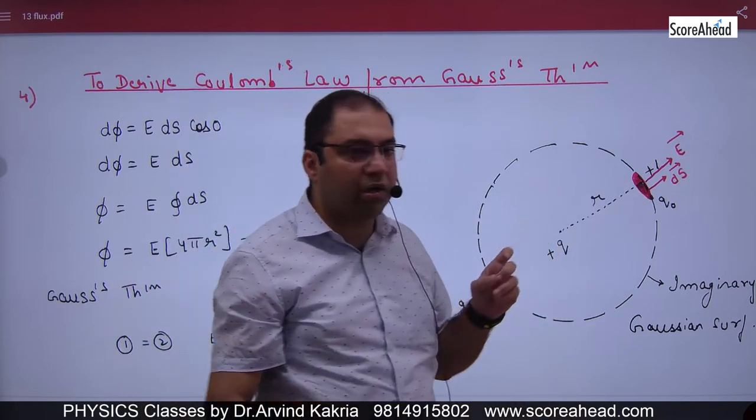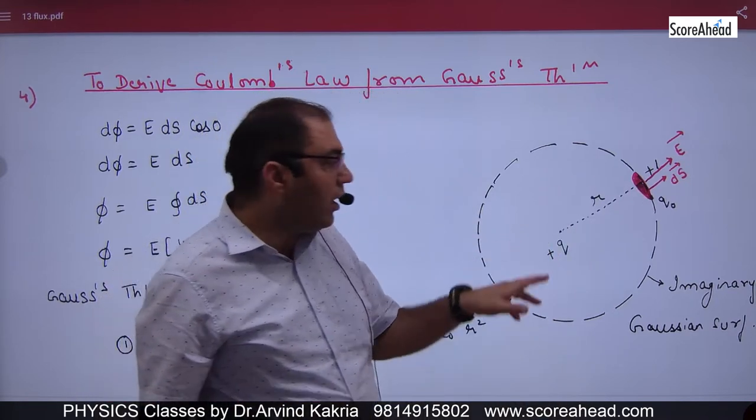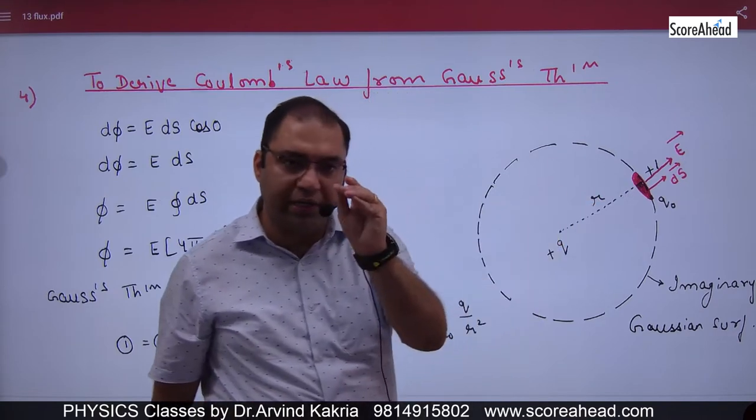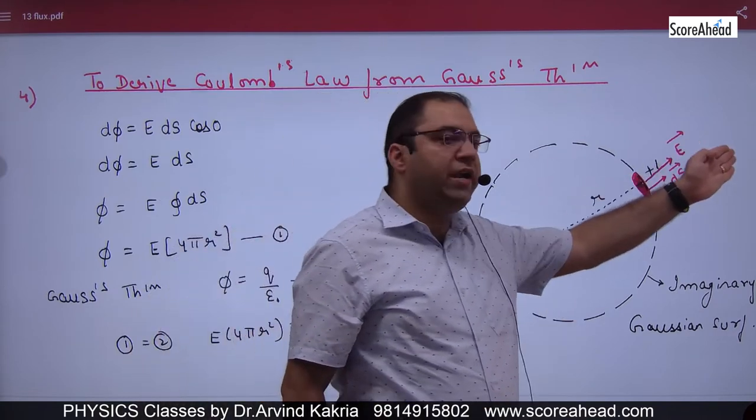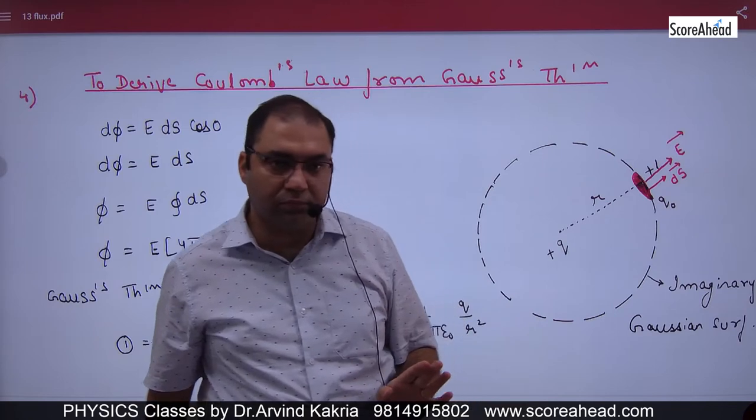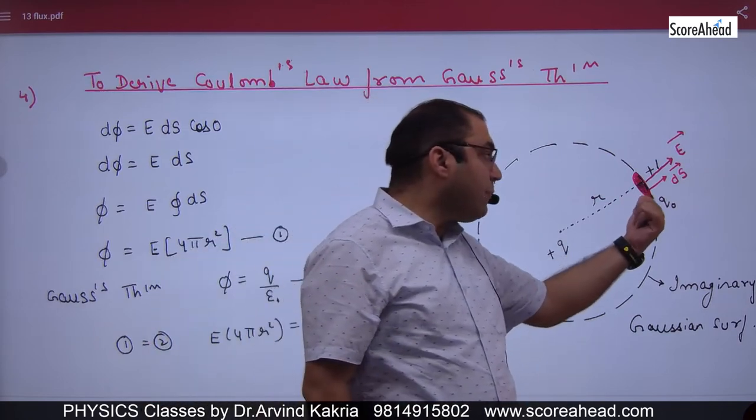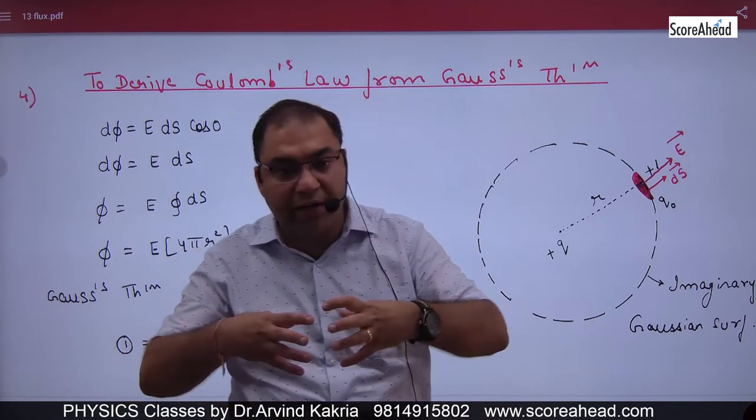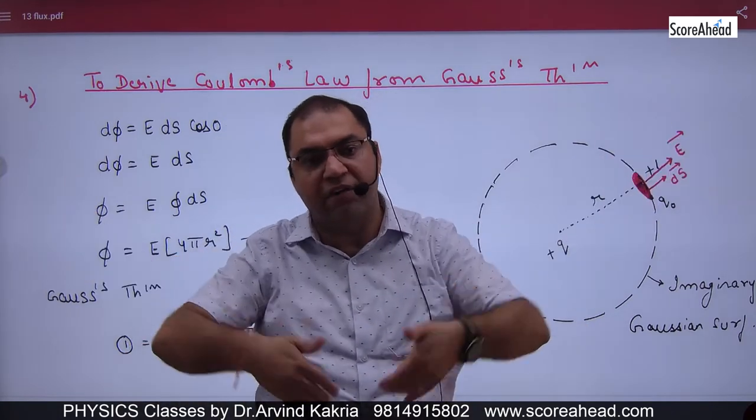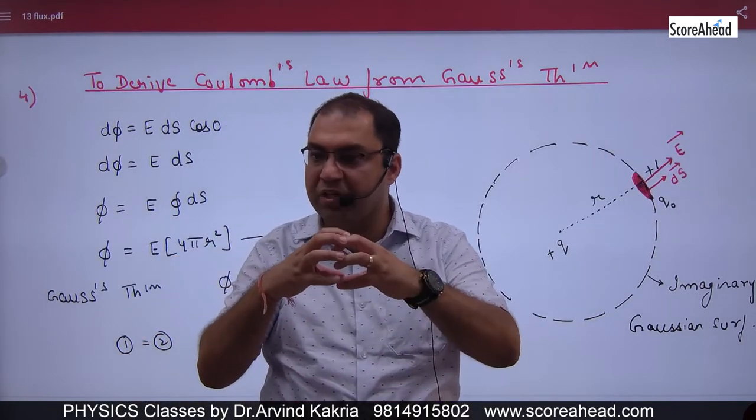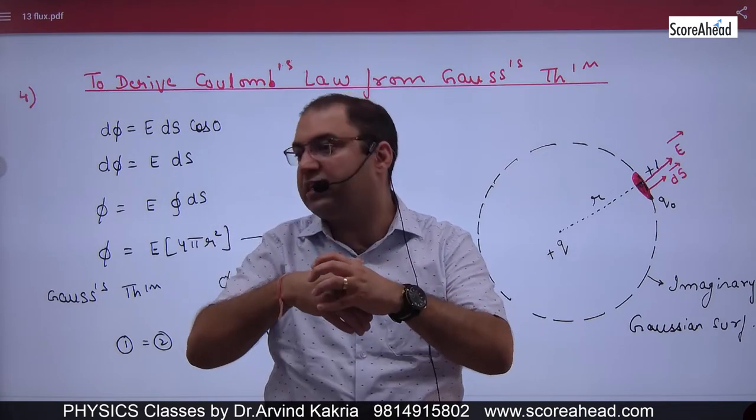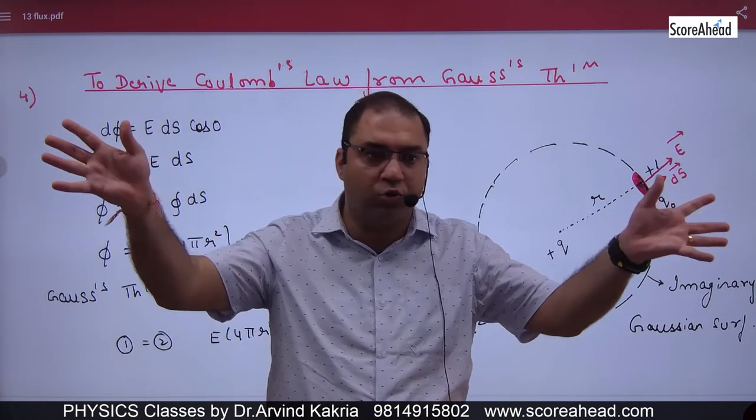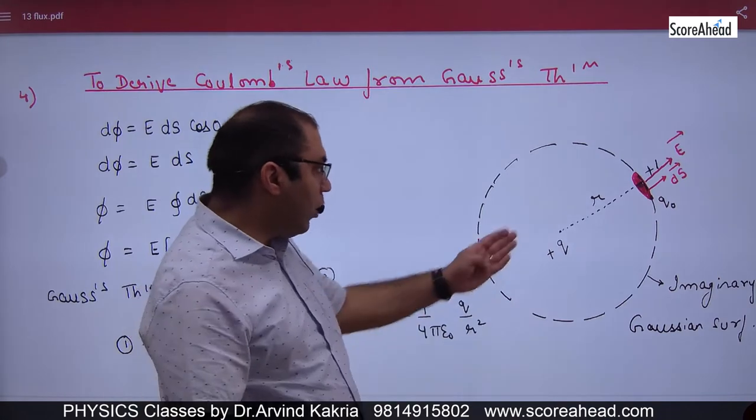So what have you done? Q is a point charge at r distance. You have taken a small Gaussian element ds. Ds is perpendicular to the surface. Some people think it can be perpendicular either way. The area vector is always outwardly for a closed surface like a sphere. It will not become inside, so that's why it remains outwardly. This is outwardly ds.